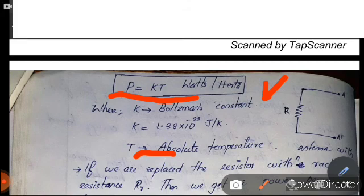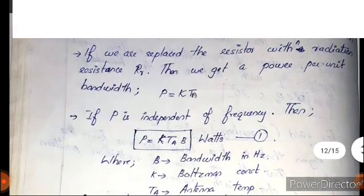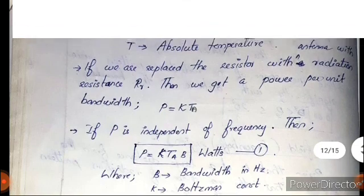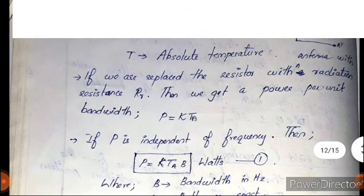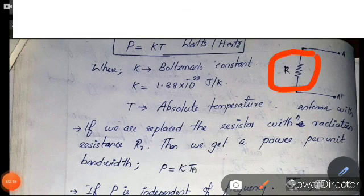If we replace the resistor with radiation resistance Rr, we get power per unit bandwidth P equal to K into Tm. Then if we replace the resistor with the antenna, we replace the antenna radiation resistance with the antenna temperature.